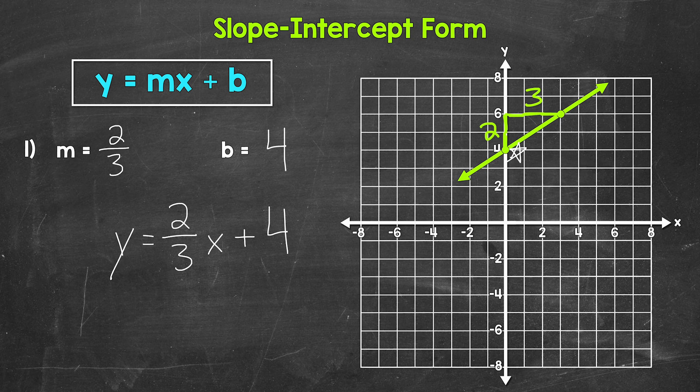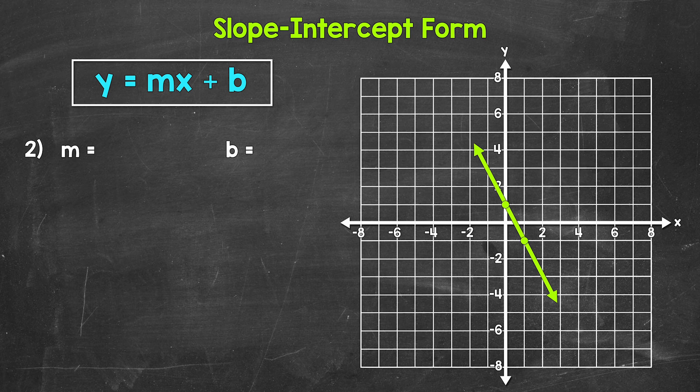Let's move on to number 2. Taking a look at number 2, let's find our slope and y-intercept. For number 1, our line was going upward as it moved from left to right — it had a positive slope. Now for number 2, we can see that the line is moving downward as it moves from left to right, so this line has a negative slope. This line crosses the y-axis at 1, so our y-intercept is 1.